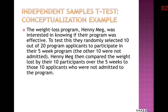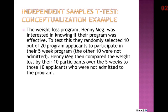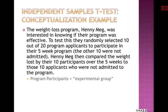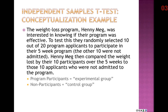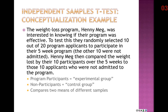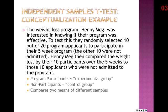Let's conceptualize with an example. The weight loss program Hennie Mag wanted to know if their program was effective. They randomly selected 10 out of 20 applicants to participate in their five-week program; the other 10 were not admitted. Hennie Mag then compared the weight lost by their 10 participants over five weeks to those 10 applicants who were not admitted. We have program participants as the experimental group and non-participants as the control group—two different samples—and we compare the mean weight loss of each.